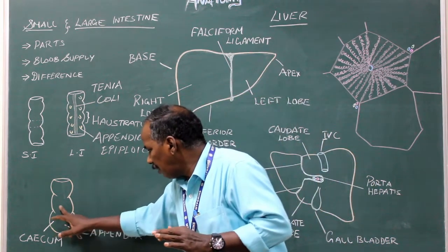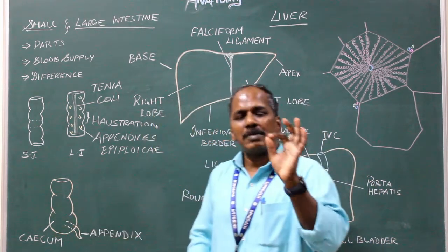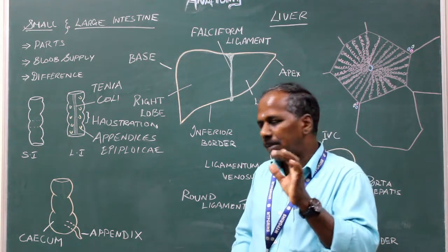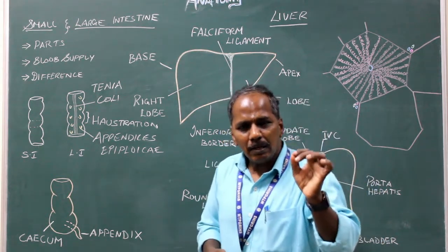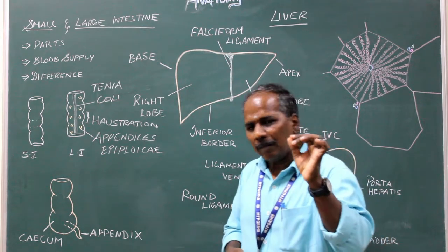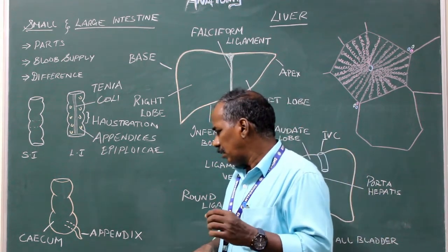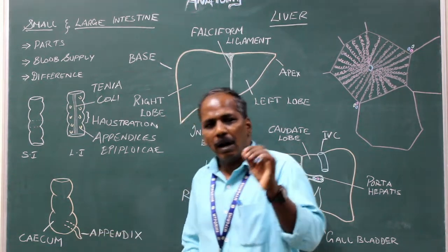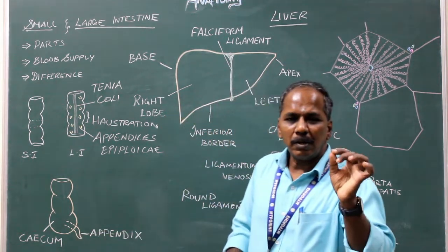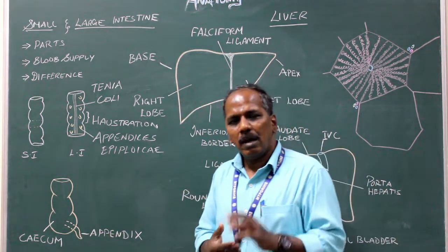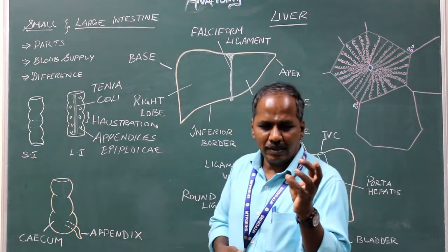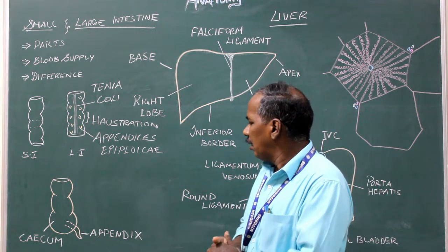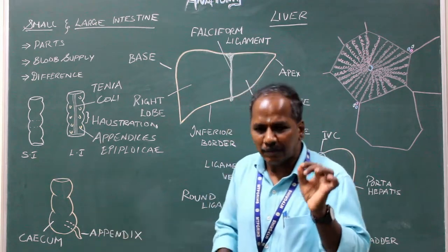Position of the appendix: the most common position is the retrocecal position — retro meaning behind the cecum — otherwise known as the 12 o'clock position. The second most common position is the pelvic position, also called the 4 o'clock position. Other positions include 2 o'clock, 3 o'clock, and 11 o'clock positions.